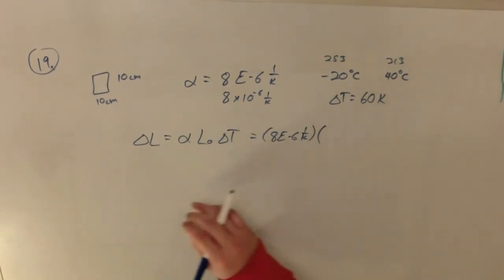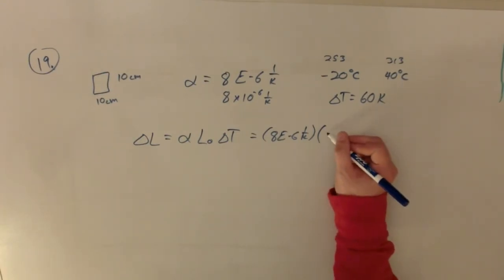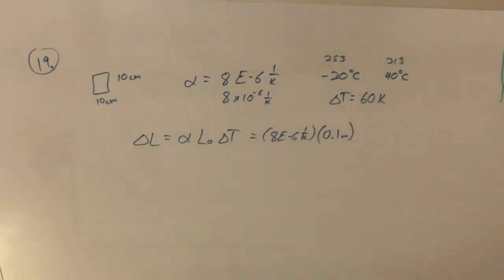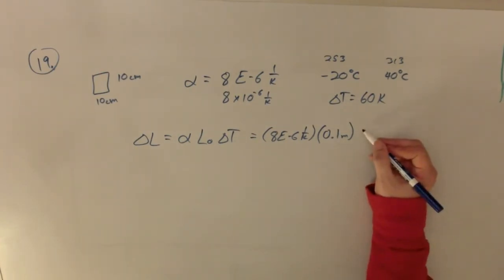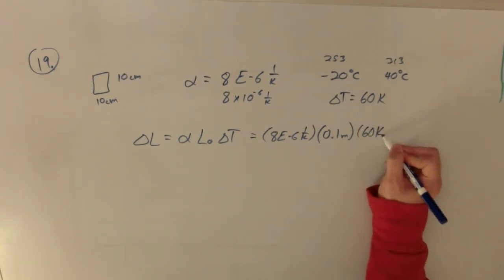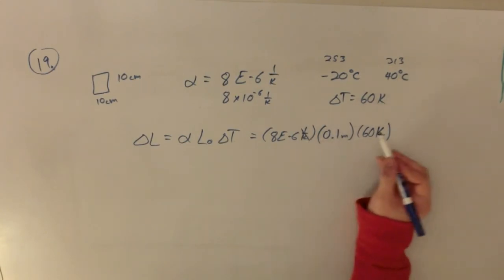So our length, we could put in 10 centimeters, but just to be safe, let's go ahead and find it in meters, 0.1 meters. That way we'll get meters out. Never hurts to do things in the standard units as long as you keep track of them. And then delta T is going to be 60 Kelvin. We'll see that the 1 over Kelvin, the Kelvins cancel out and we're left with some change in length in meters.